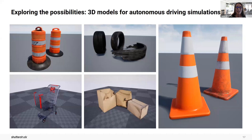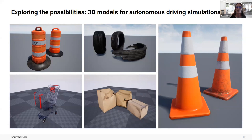Oftentimes, researchers would like to test their autonomous driving software in an environment that would not be safe to simulate in the real world. To do this, they use 3D models. 3D models can be used to train computer vision models even more precisely for things like gauging distances or other spatial dynamics when you drive at different speeds.